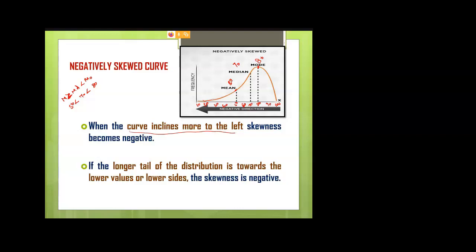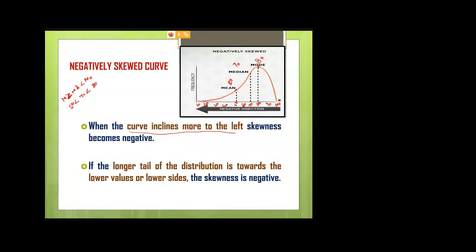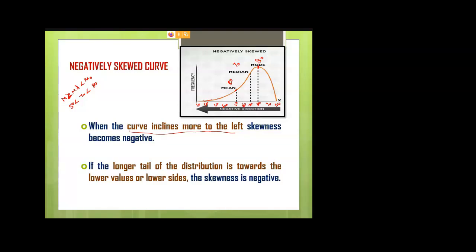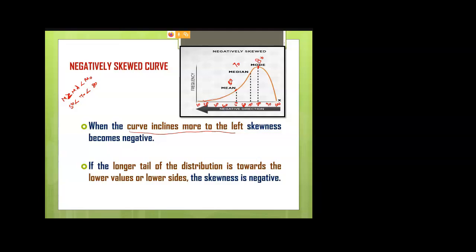To summarize the three cases: if mean equals median equals mode, it is the normal probability curve. If mean greater than median greater than mode, it is positive skewness. If mode is the highest value compared to the other two, then it is negative skewness — satisfying mean less than median less than mode.